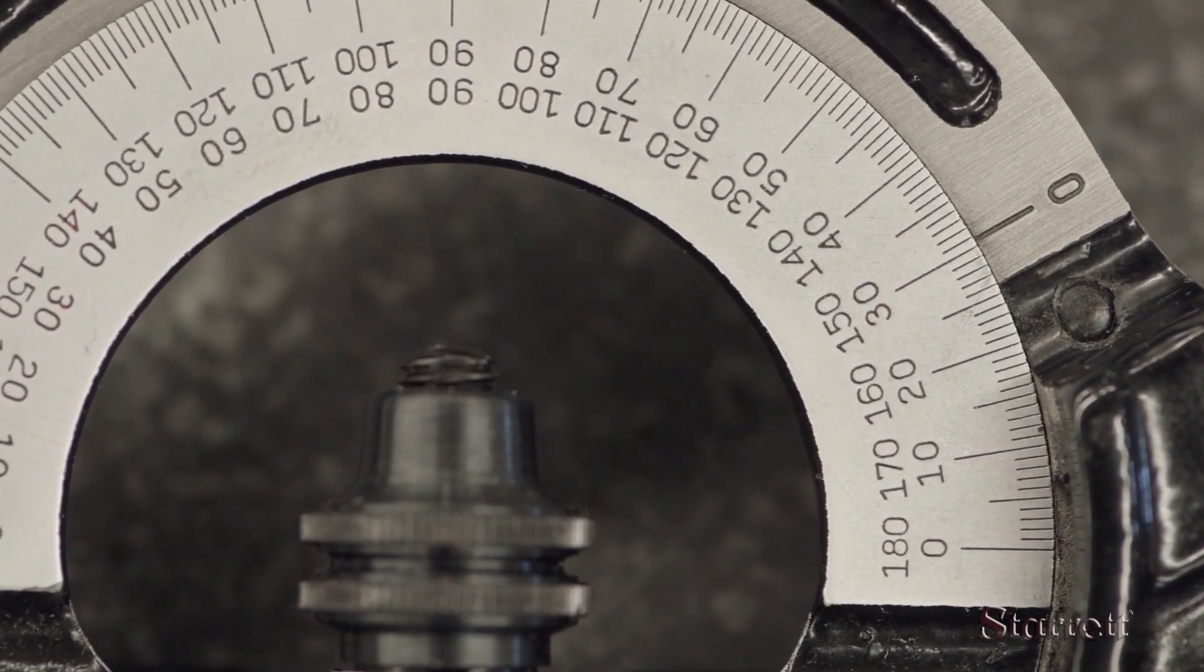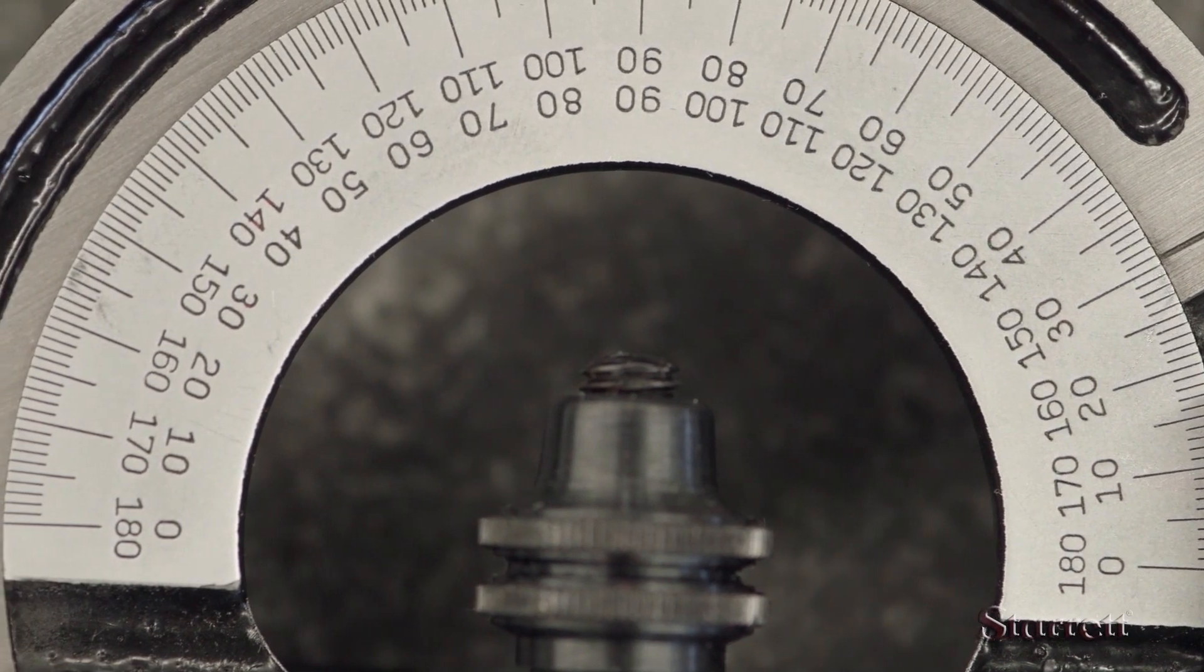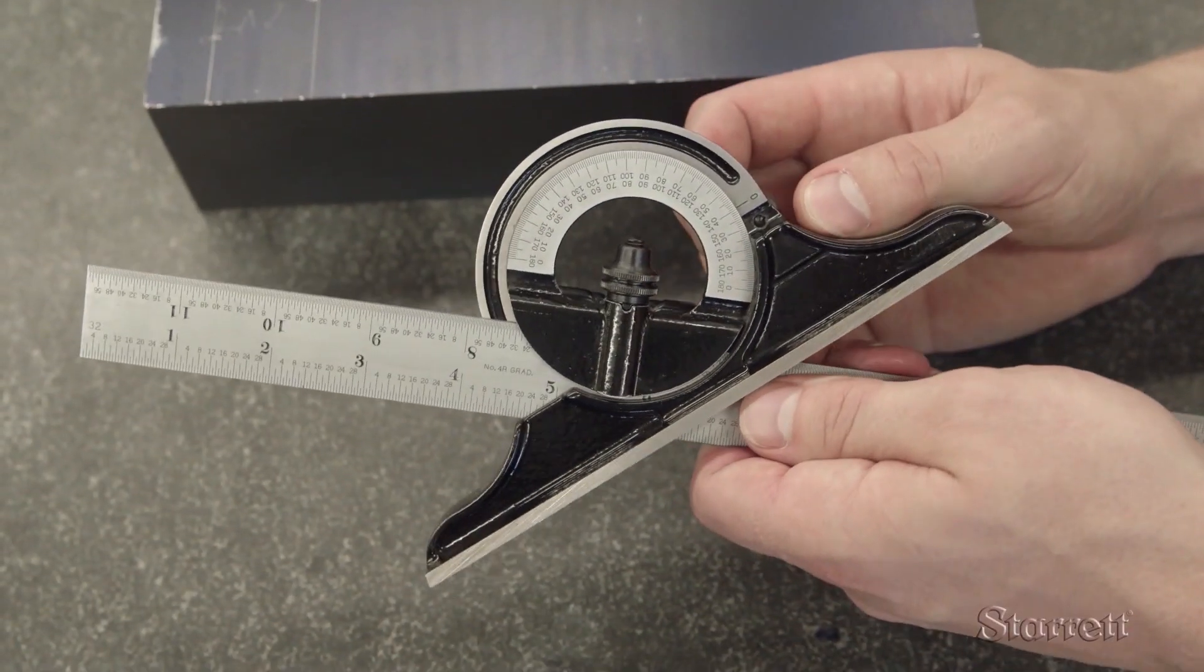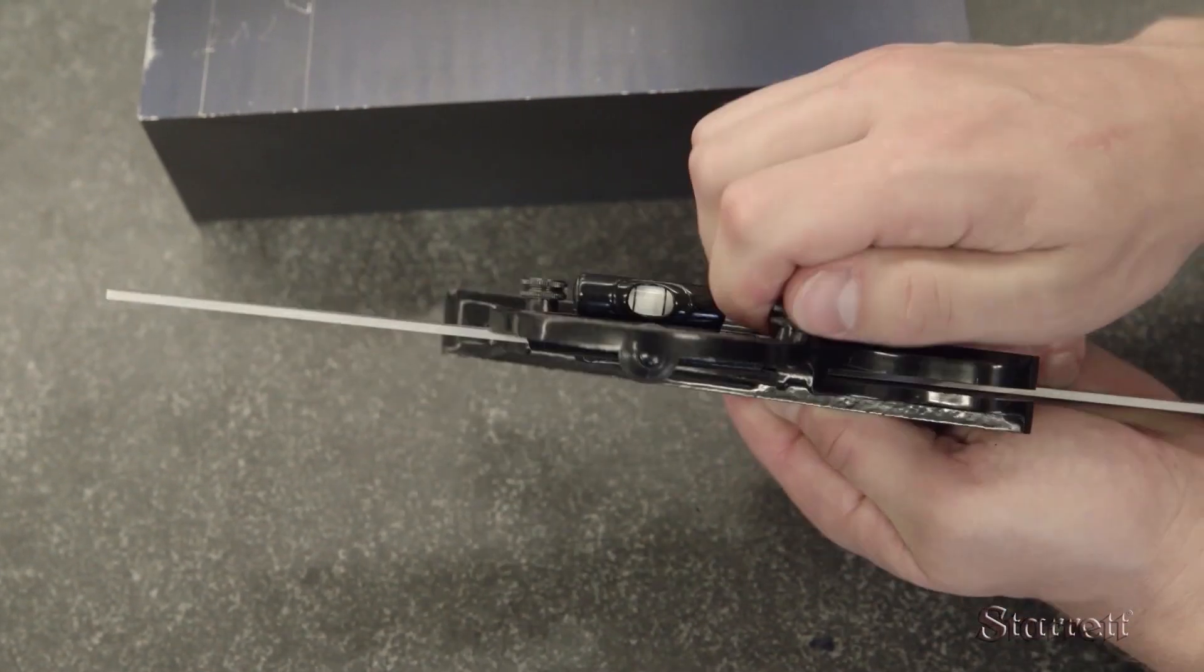The protractor head lets you check or set an angle to the closest degree. Its finely lined protractor has zero to 180 degree scales in both directions. Once set, the angle can be securely locked.